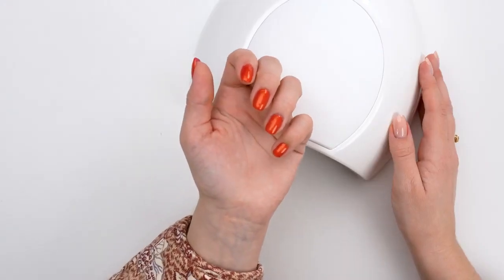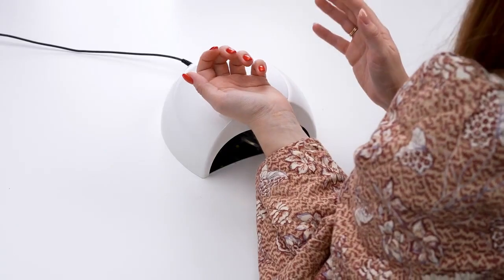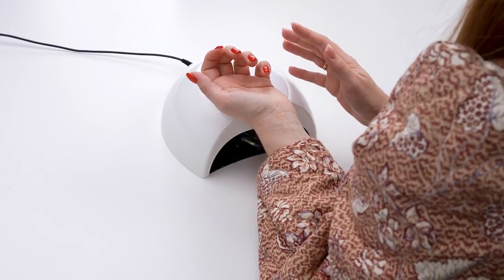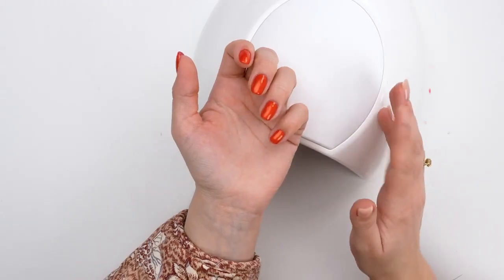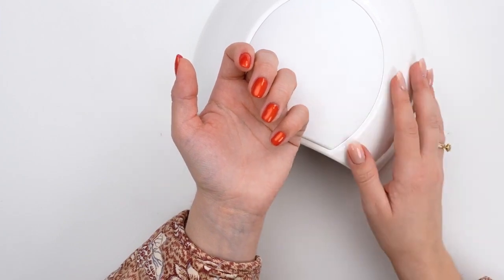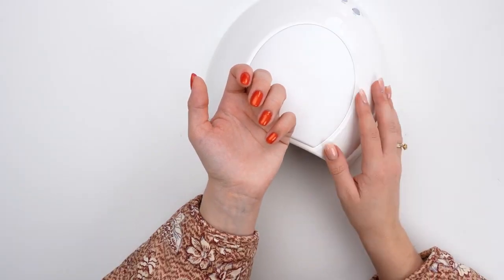After the gel polish has cured for 60 seconds, there's still a slightly sticky layer or tackiness on the surface, just like before. It must stay, not be removed, to ensure the top coat adheres well to the color. We're ready for the next step, applying the top coat.